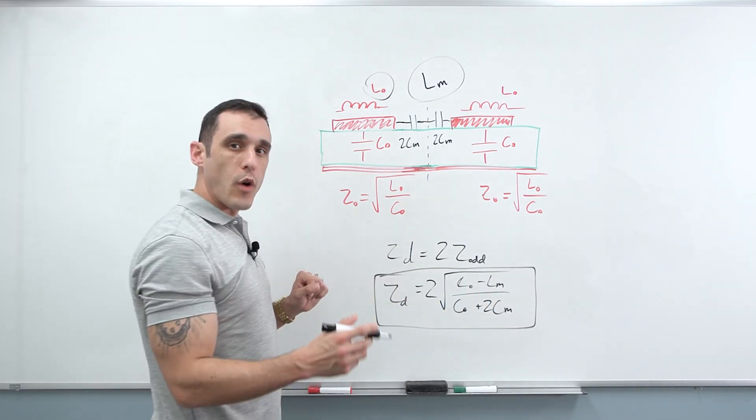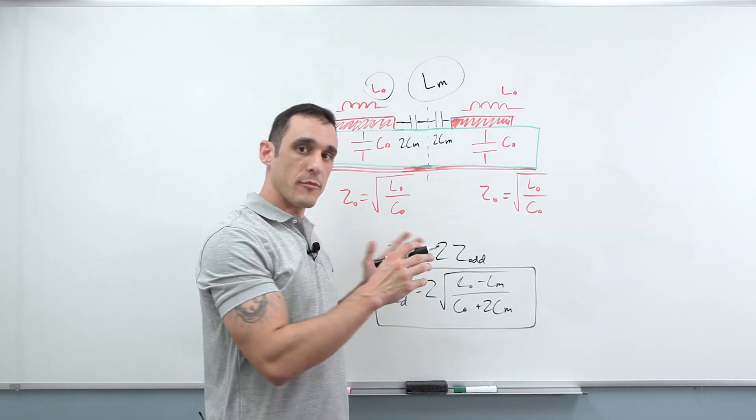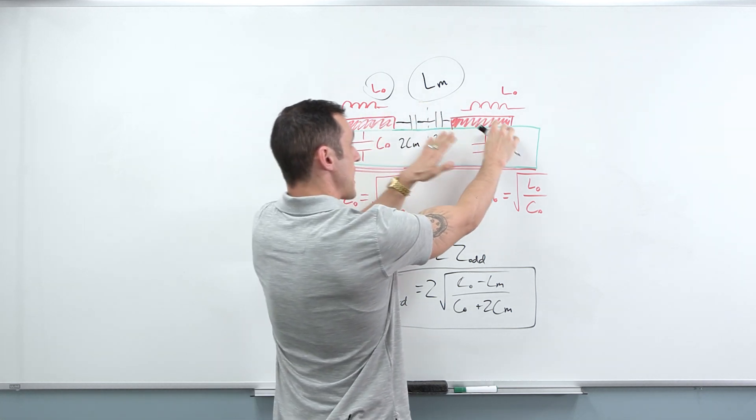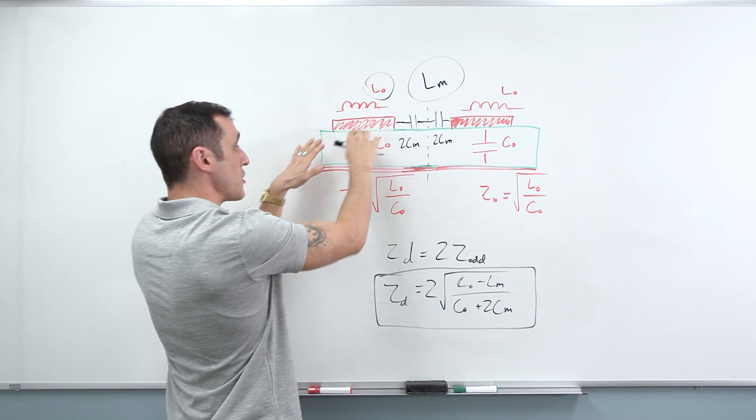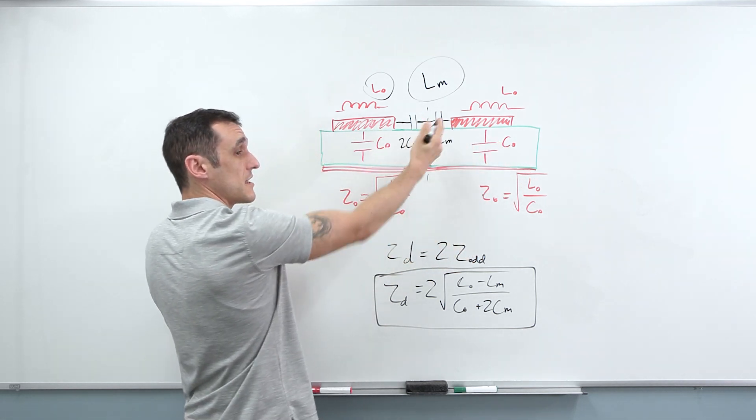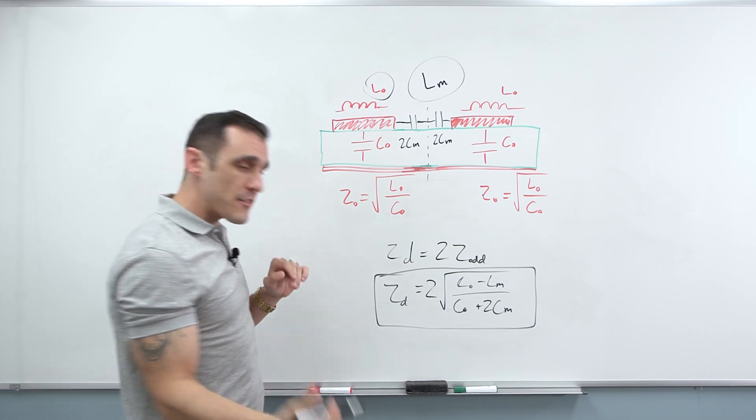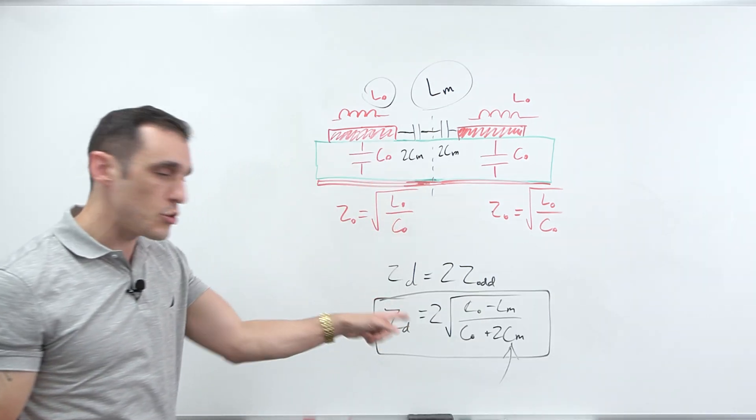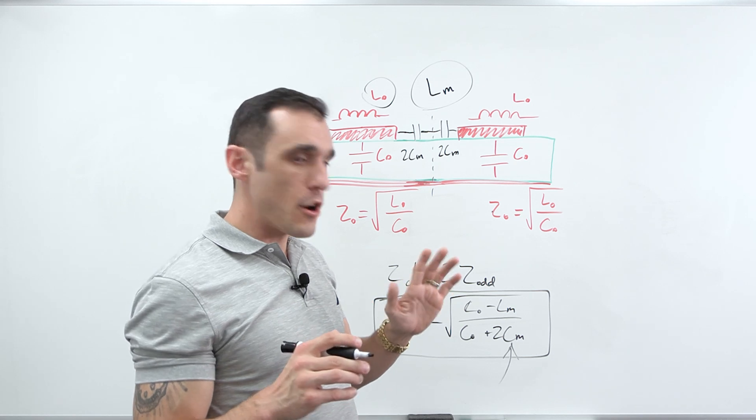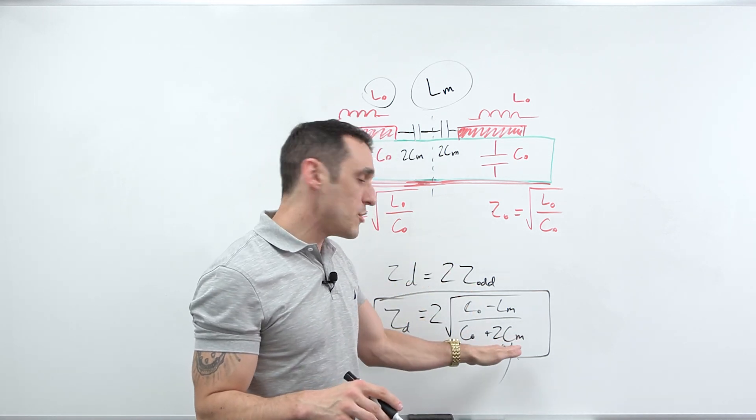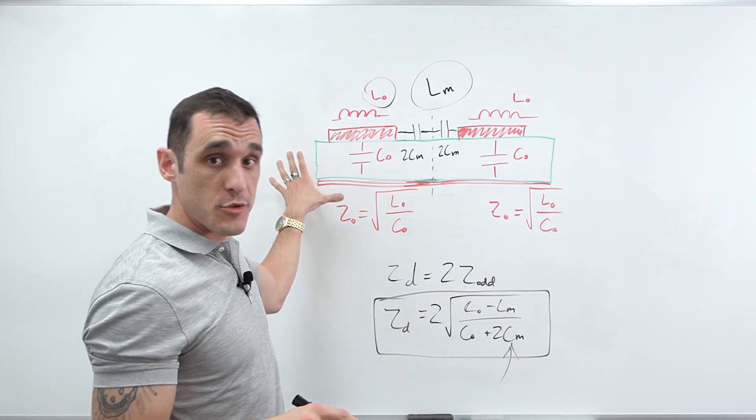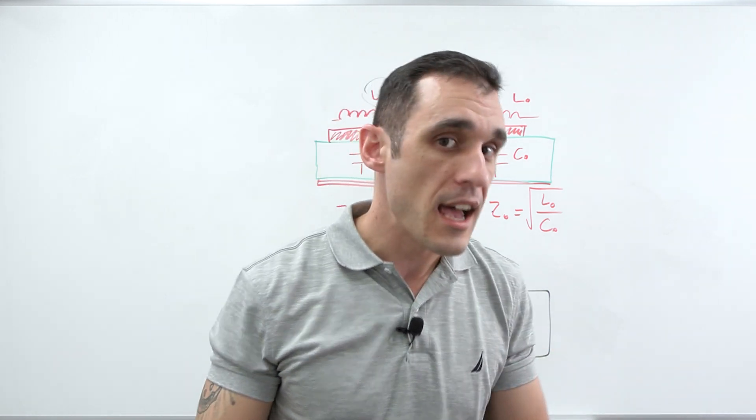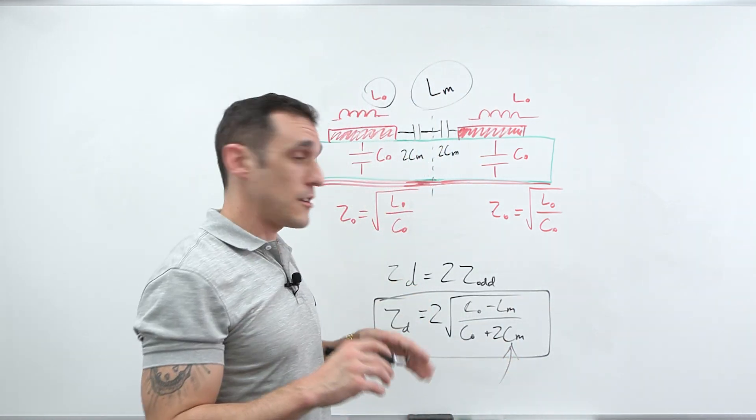For L sub M, I have seen one paper where there is a closed form formula for L sub M for this specific trace arrangement. So where you have two rectangular conductors being routed over an infinite plane with some set distance between them. So I have seen that paper. I haven't seen a paper that gives an analogous formula for the C sub M term here. So this is the mutual capacitance. So if anybody out there knows of a good paper that has a mutual capacitance formula for this trace arrangement, I would love to see it. If you know of that paper, please post it in the comments. I'd love to read it. I might just use it in one of my research papers and hopefully there's something good in there.